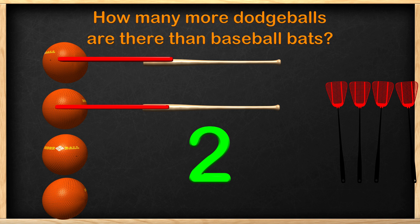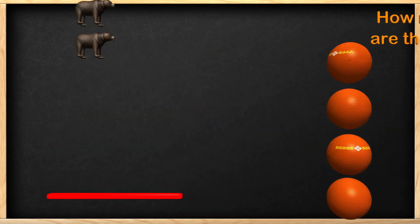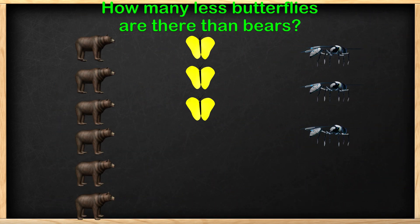Let's try one more and see if you can tell me if there is a distraction in the next problem. The question asks how many less butterflies are there than bears? Now that we have the problem, can you tell me if there is anything here that is not needed to solve the problem?